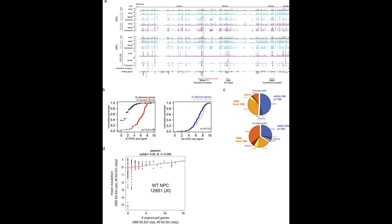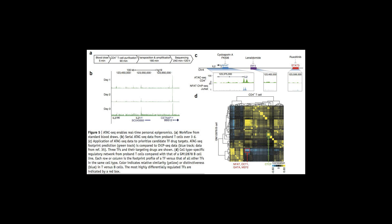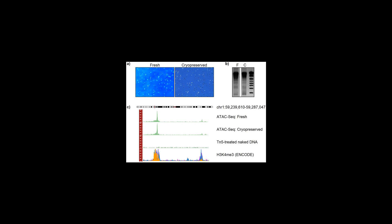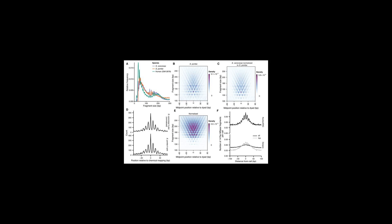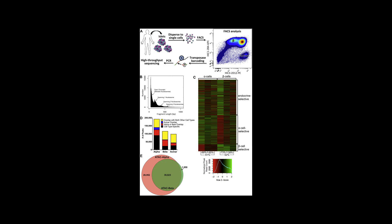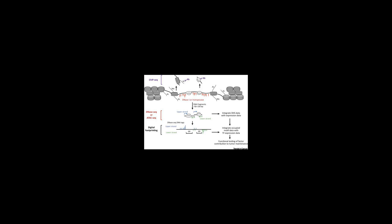One can also observe subregions with depleted signal. These subregions, typically only a few base pairs long, are considered to be footprints of DNA binding proteins. These proteins will protect the DNA strand from transposase cleavage and will consequently cause a depletion in the signal.